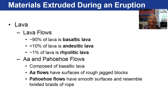Not surprisingly, approximately 90% of lava is basaltic in composition, due to the fact that our planet is 70% ocean and basalt makes up ocean floors. Less than 10% of lava is andesitic, and even less than that is rhyolitic in composition.